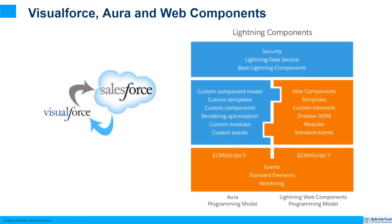Before going to the demo, I'll showcase how Salesforce evolved from Visualforce to Aura and Web Components, and how we at QInfoTech have worked on Visualforce and moved to Aura and Web Components. We had Visualforce pages for UI and the Apex controller to get data from the database. In Aura and Web Components, we use custom component models, templates, modules, and events. However, Aura components are slower than Web Components because Aura uses ECMAScript 5, while Lightning Web Components use ECMAScript 7. In Web Components, we use Shadow DOM, modules, and standard events to get data from Apex.